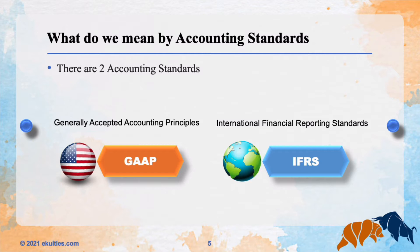We saw this slide in part one, so let me quickly review it. Accounting Standards are a set of guidelines and rules that companies must follow when preparing their financial statements. Companies follow standard principles and procedures that define the basis of financial accounting policies and practices. The purpose is to ensure that financial statements from multiple companies are comparable, because all companies follow the same set of rules.